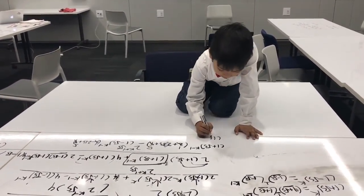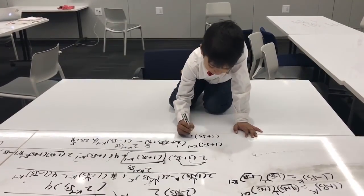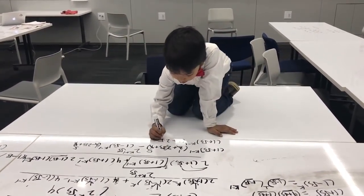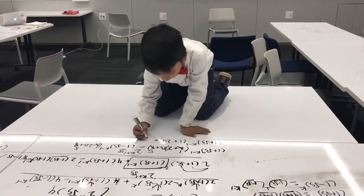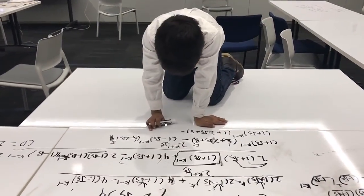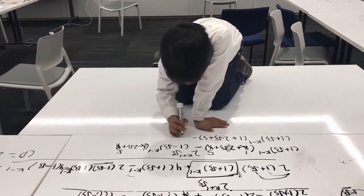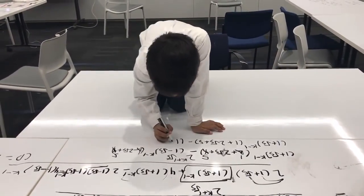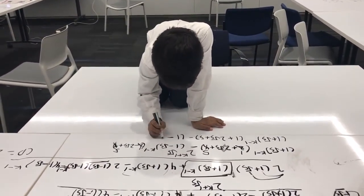1 plus square root of 5, minus 1: 1 plus 2 square root of 5 plus 5 minus 1 minus square root of 5.